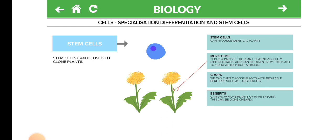Crops. We can choose plants with desirable features such as large fruits. Benefits: can grow more plants of rare species, and this can be done quickly.